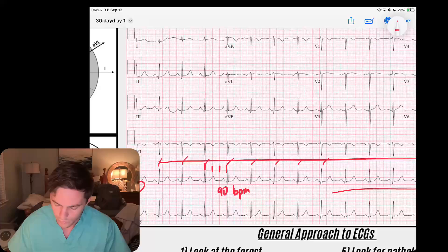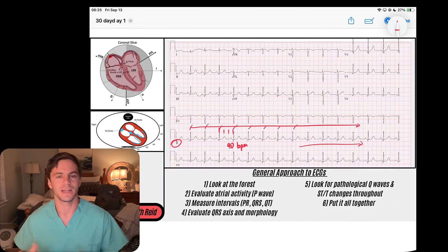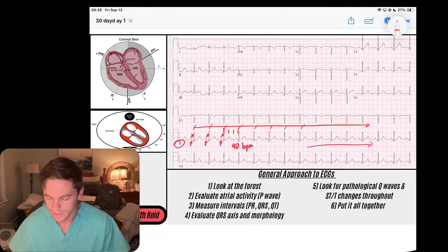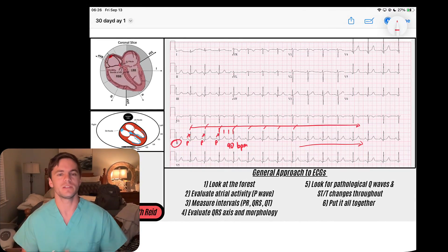We have a regularly occurring rhythm at 90 beats per minute. We quickly glance at the morphology of the waves and we see we've got these P waves occurring just before every QRS and they're conducting to our QRS complexes. I'm starting to think maybe this is a sinus rhythm, but we need to verify.